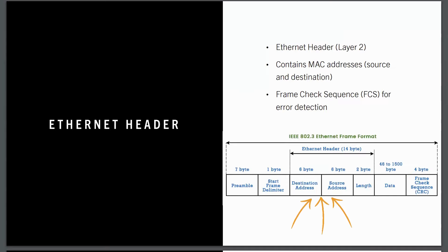The Ethernet header is part of layer two and its main job is to carry the source and destination MAC addresses. These unique addresses identify the devices communicating on the same local network, like your computer and a router. The Ethernet header also includes a frame check sequence — FCS — a mechanism used to detect errors in the data, ensuring that the data hasn't been corrupted during transmission. The Ethernet header is essential for identifying devices within a local network using MAC addresses and ensuring data accuracy with the FCS.